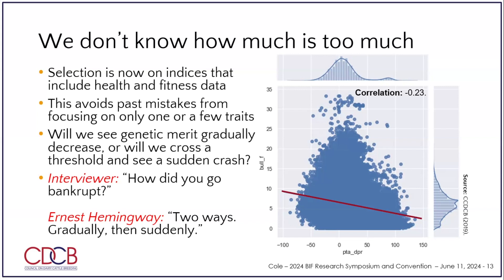This is a plot of Holstein breeding values for a measure of fertility versus inbreeding — higher inbreeding, lower fertility, generally speaking. The problem is: by the time we see it show up in the performance of the animals, it might be too late to do much about it. We may have to go to a gene bank to try to fix the population. Someone once asked Ernest Hemingway how he went bankrupt, and he said, 'Two ways — gradually and then suddenly.' I think this is not so different in concept.